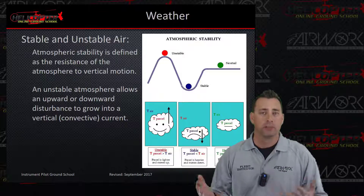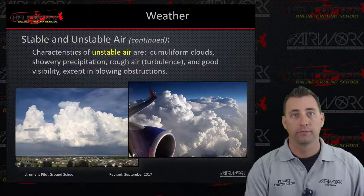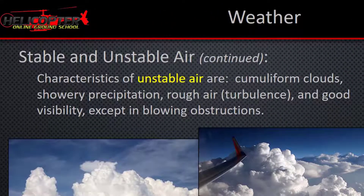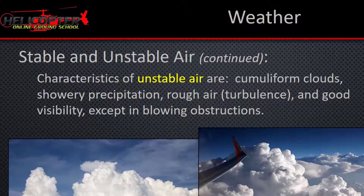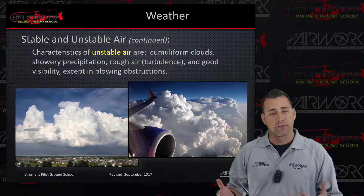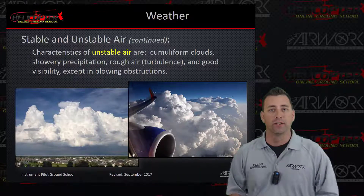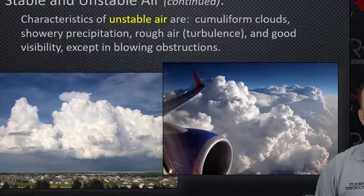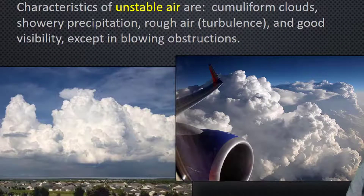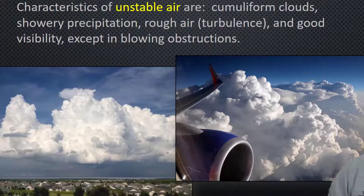And then there's neutral, which is basically everyday conditions. Characteristics of unstable air are cumuliform clouds, showery precipitation, rough air which gives you turbulence, and good visibility — except when you have blowing obstructions. The turbulence moves all the air molecules around, getting rid of haze, pollution, or anything that might be out there. With the exception of blowing obstructions, large gust fronts or lots of wind can pick up particulates and move them around as well.